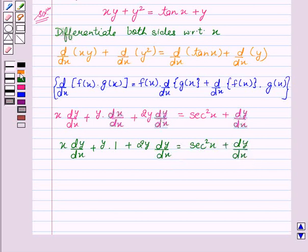This can again be written as x dy by dx plus 2y dy by dx minus dy by dx equals sec squared x minus y.